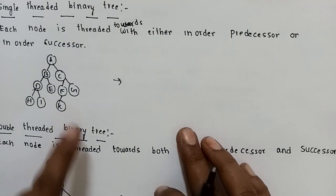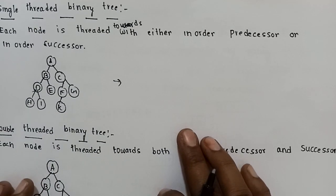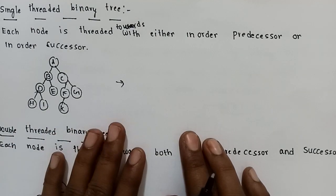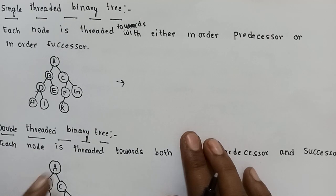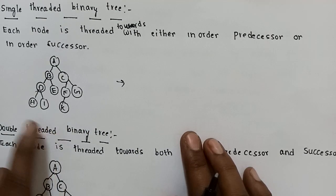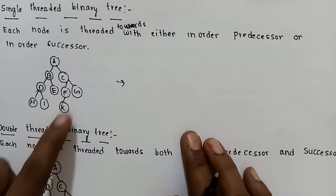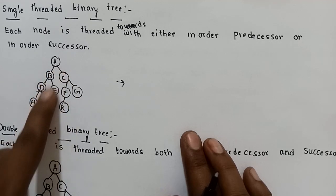In a single-threaded binary tree, each node is threaded towards either in-order predecessor or in-order successor. We will find the threaded binary tree by performing in-order traversal. The in-order traversal visits left, then root, then right.